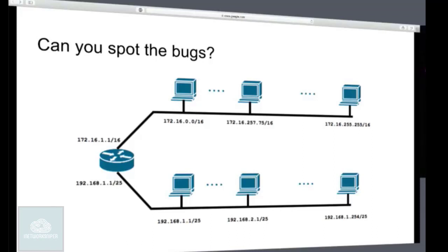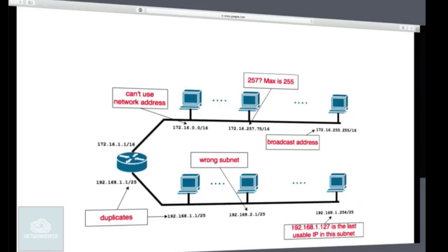So what was your point here? It's a broadcast address, so you cannot use a broadcast address for a host. And here you have a 257. So here are the answers. In the subnet, you've got some duplicates. And the other one which is pointed out correctly is there is an incorrect subnet up here. You cannot use the network address, and you cannot use the broadcast address. So those are some of them.